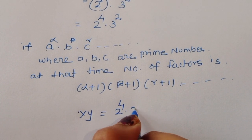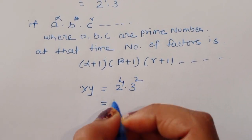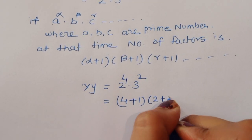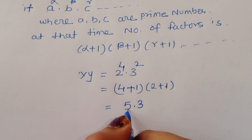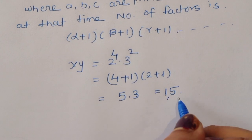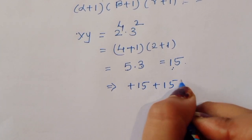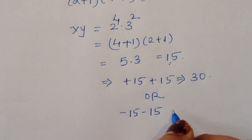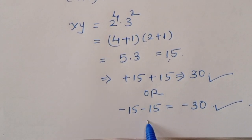Applying the formula: (4 plus 1) times (2 plus 1) equals 5 times 3 equals 15. But this may be positive and negative both, so it may be plus 15 or minus 15. Plus 15 plus 15 is equal to 30, or minus 15 minus 15 is equal to minus 30. So we have both values: 30 and minus 30. This is the solution.